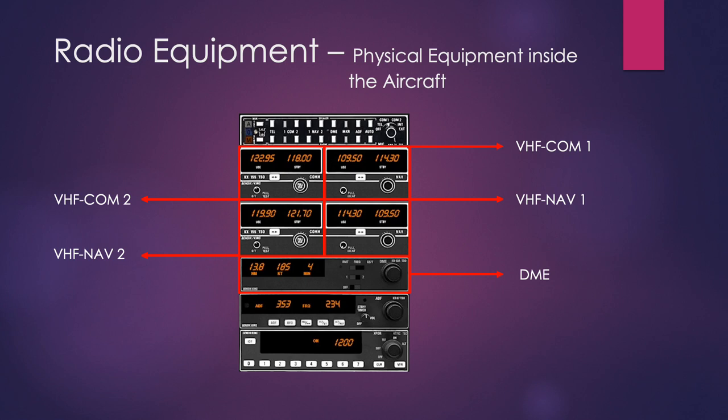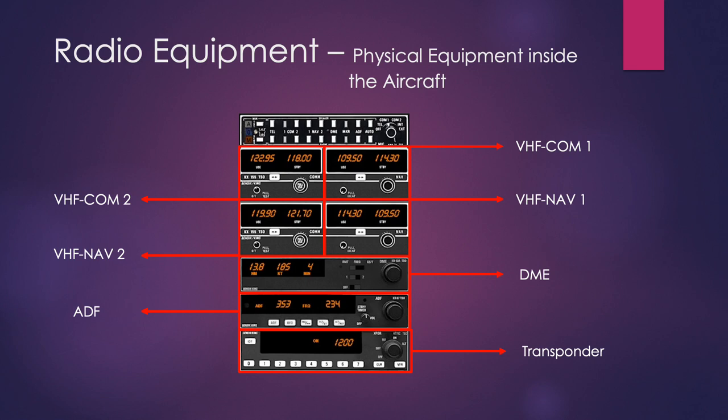We have a DME — Distance Measuring Equipment — which allows us to find our distance from a particular point. An ADF — Automatic Direction Finder — which we can tune to a beacon on the ground; it will display in the aircraft where that beacon is. And lastly, a transponder, which is a four-digit code that air traffic control can see. Once they see it, they can identify our location on radar once we've input the code they've given us.